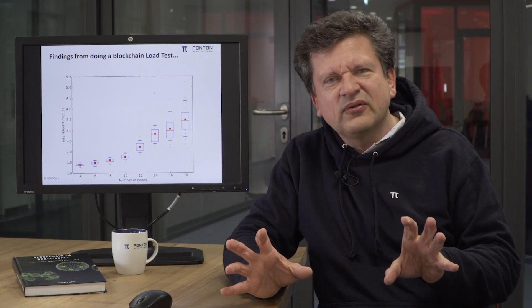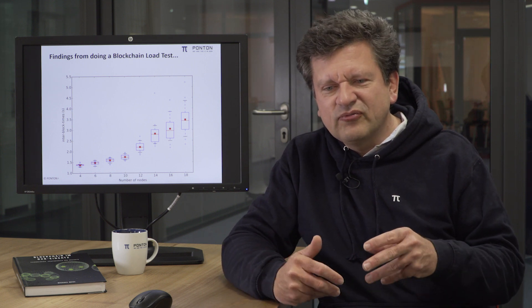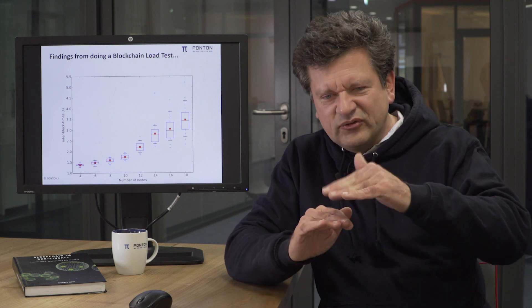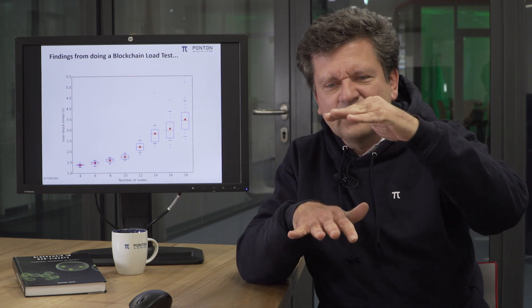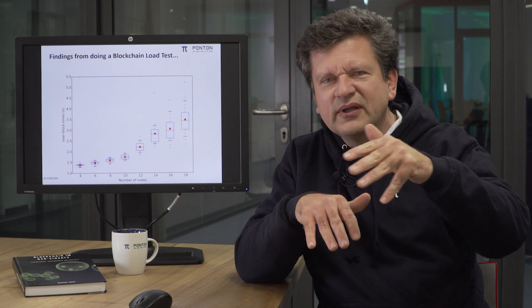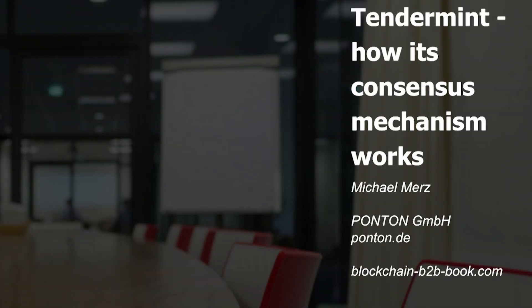Tendermint is reduced to the consensus mechanism and writing data into the blockchain — not much more. Whenever you use Tendermint, you have to add additional middleware layers yourself, which is exactly what we did with the wormhole. If you're interested in using wormhole, visit our website at wrmhl.pontong.de, where we keep you up to date on the development of wormhole. Thank you.